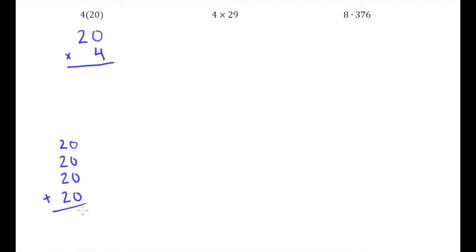That's easy enough to do. We add up the ones column and still have zero, and then two plus two plus two plus two is eight. So we understand that if you had four twenty dollar bills, you'd have eighty dollars. Since we know that's the answer, I'm just going to put eighty underneath my notation here for twenty times four.